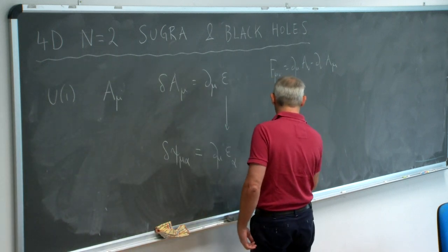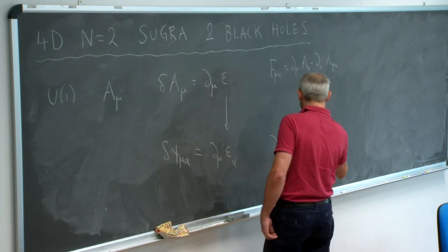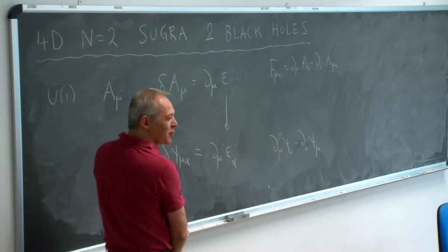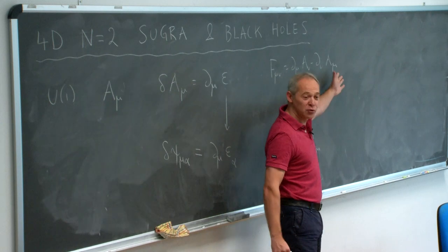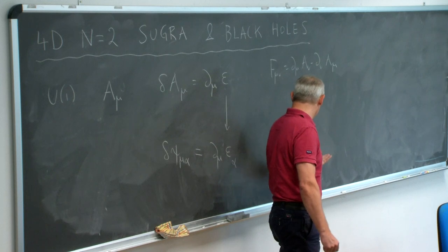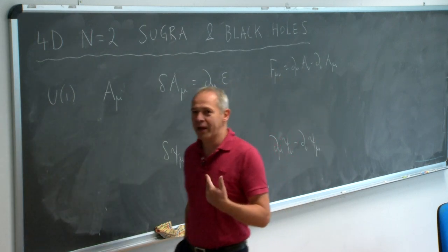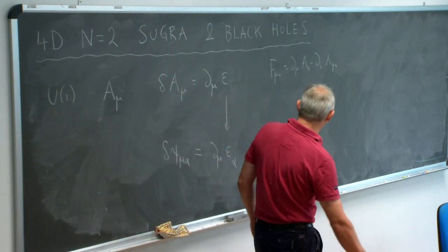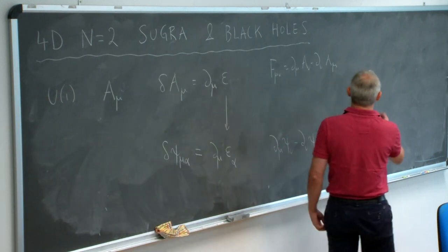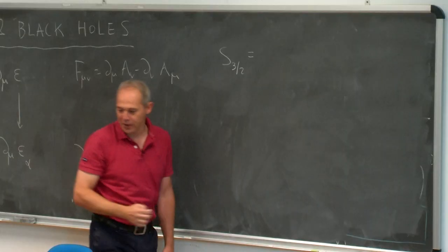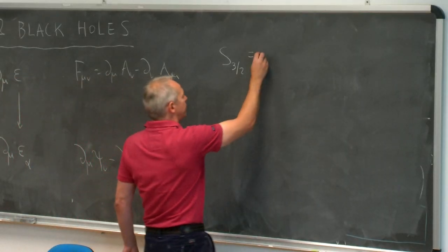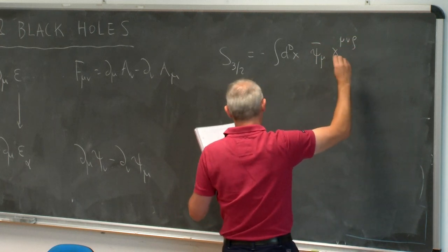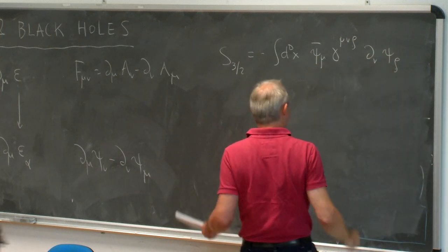This spin-3/2 field has a gauge invariant combination — I suppress the spinor indices. This is clearly invariant under the spinorial gauge transformation. You cannot make an action as F-mu-nu squared for spinors; we need first-order actions with only one derivative. The action we write down for it is the Rarita-Schwinger action, written down perhaps in the 1930s. You can do this in arbitrary dimensions. This is the Rarita-Schwinger action.